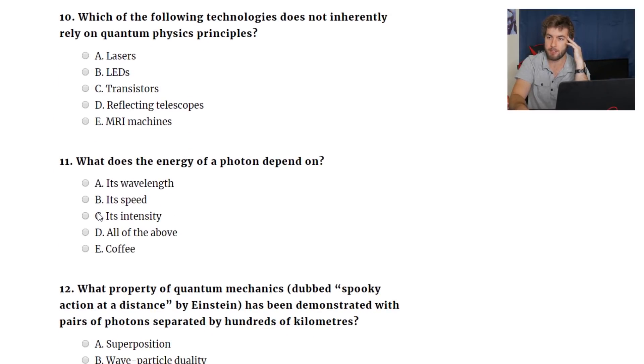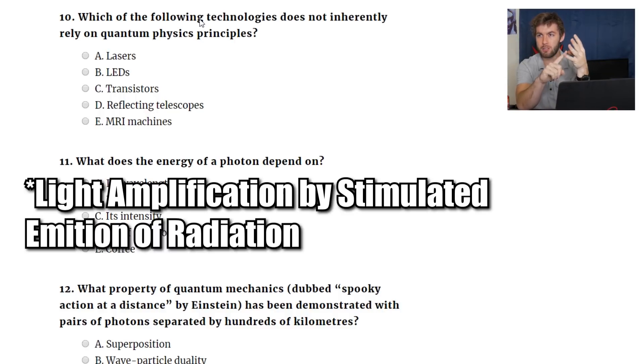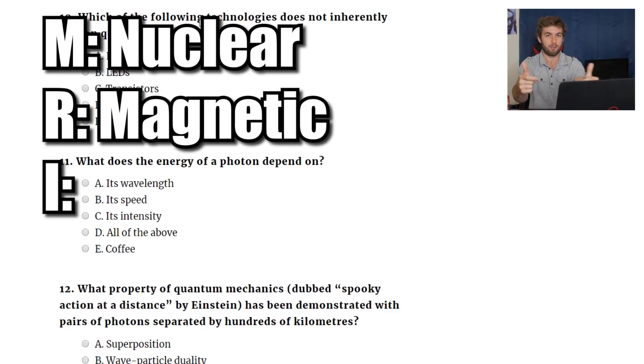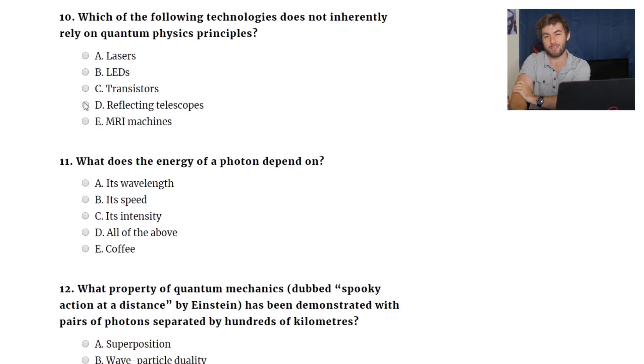Which of the following technologies does not inherently rely on quantum physics principles? Lasers, LEDs, transistors, reflecting telescopes, or MRI machines? Lasers. That's actually an acronym. I wish I didn't say that because I kind of forgot what it stands for at the moment. Light, light amplified stimulated emission of radiation, I think. Don't quote me on that. LEDs, light emitting diode. Transistors, all of those are quantum stuffs. Reflecting telescopes, I mean, it depends on if you count like photons reflecting or passing through lenses as being quantum system-principle-related. MRI machines. MRI stands for nuclear magnetic resonance. It's gotta be the reflecting telescopes. Everything else is too rooted in it.